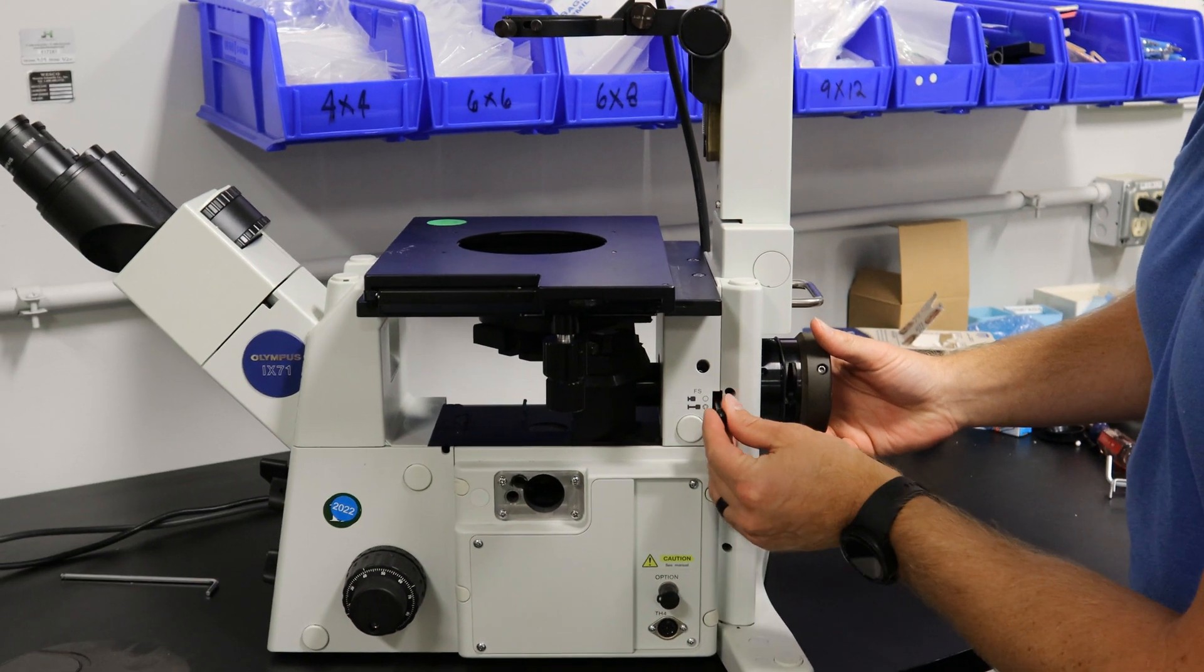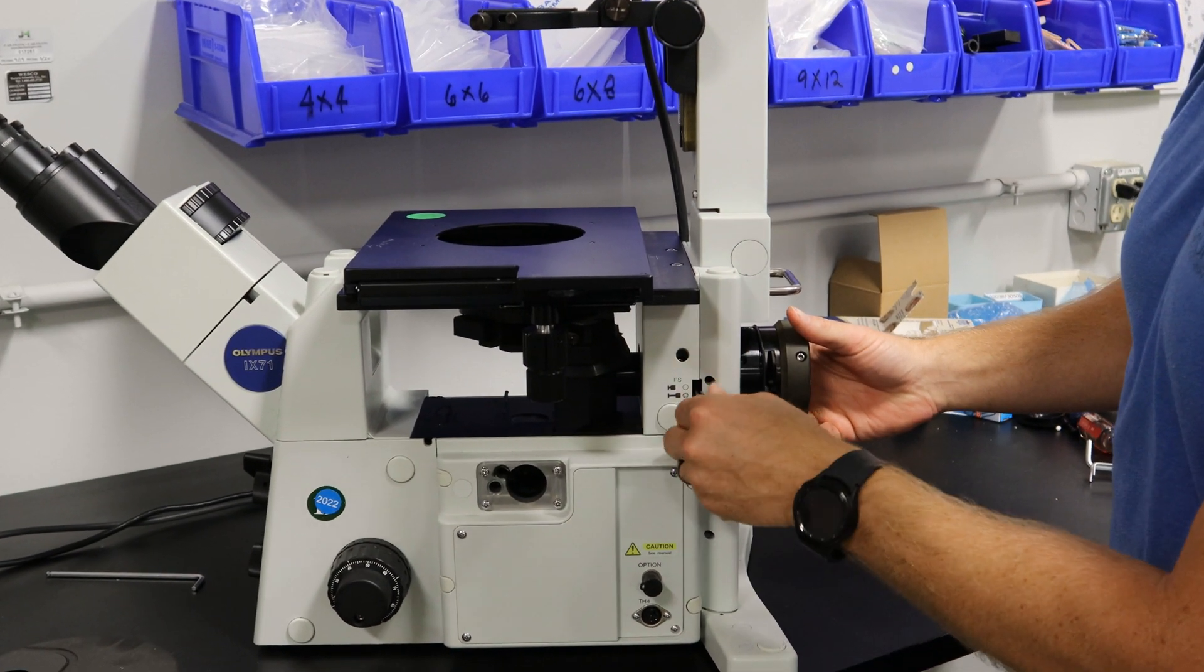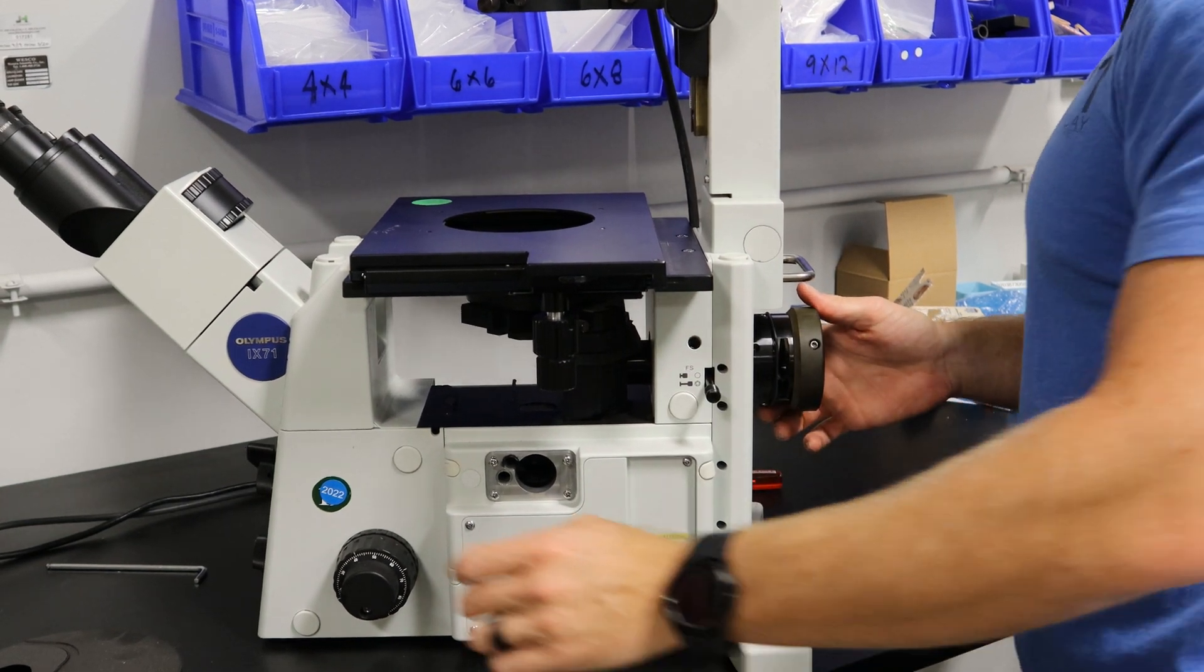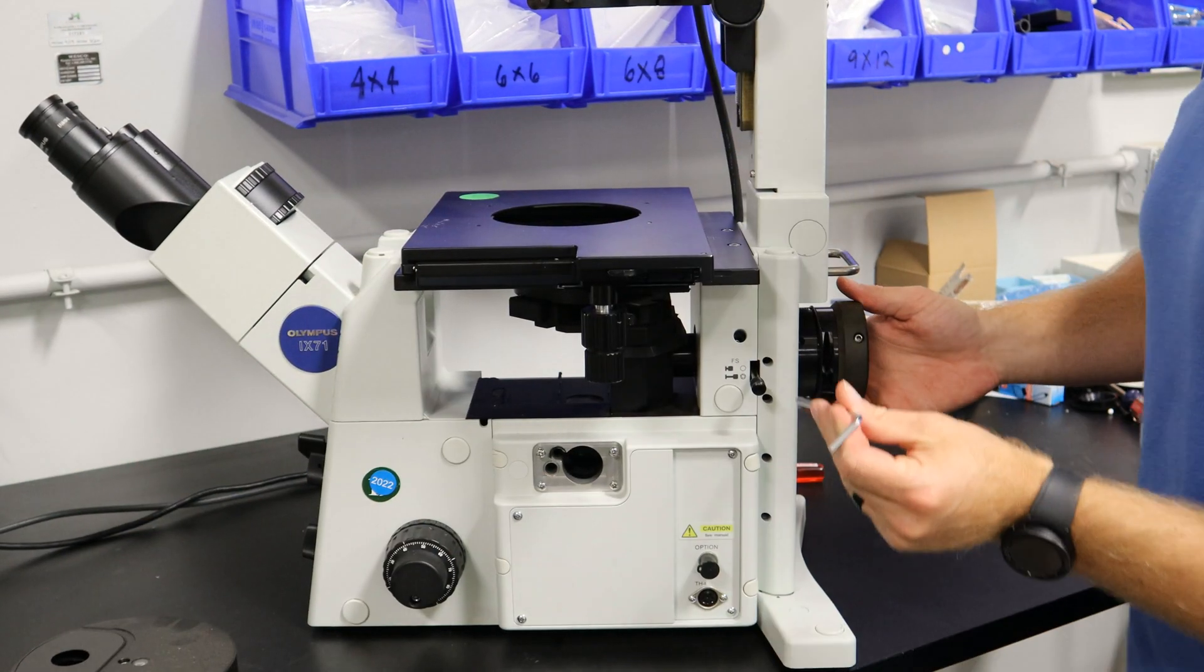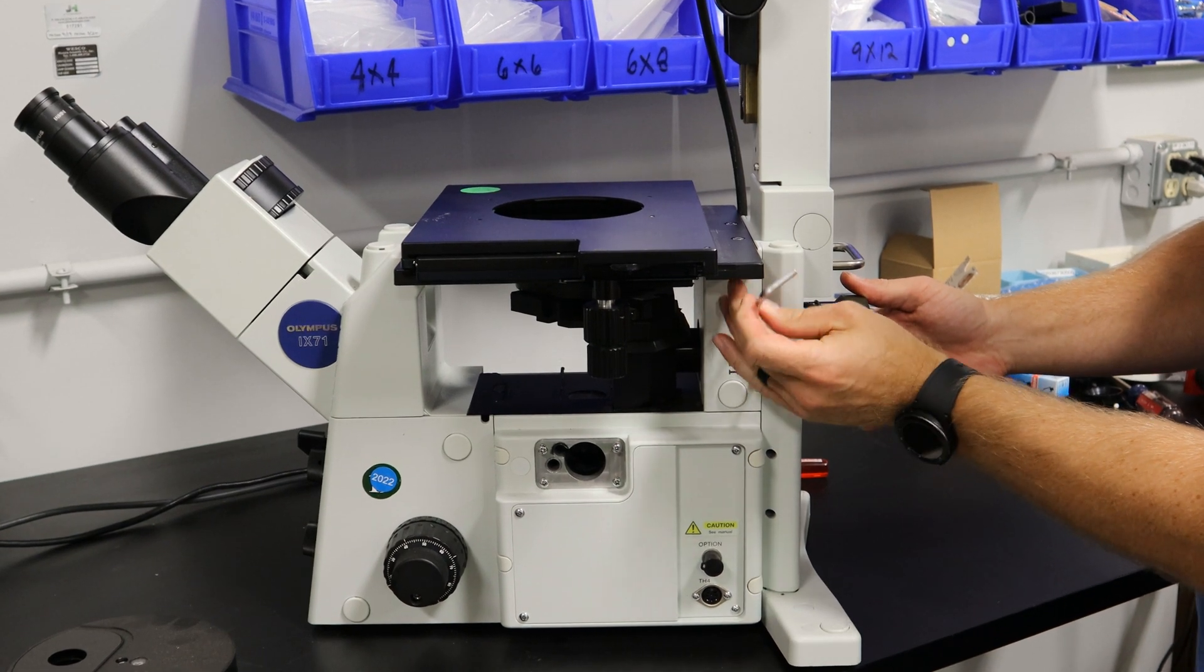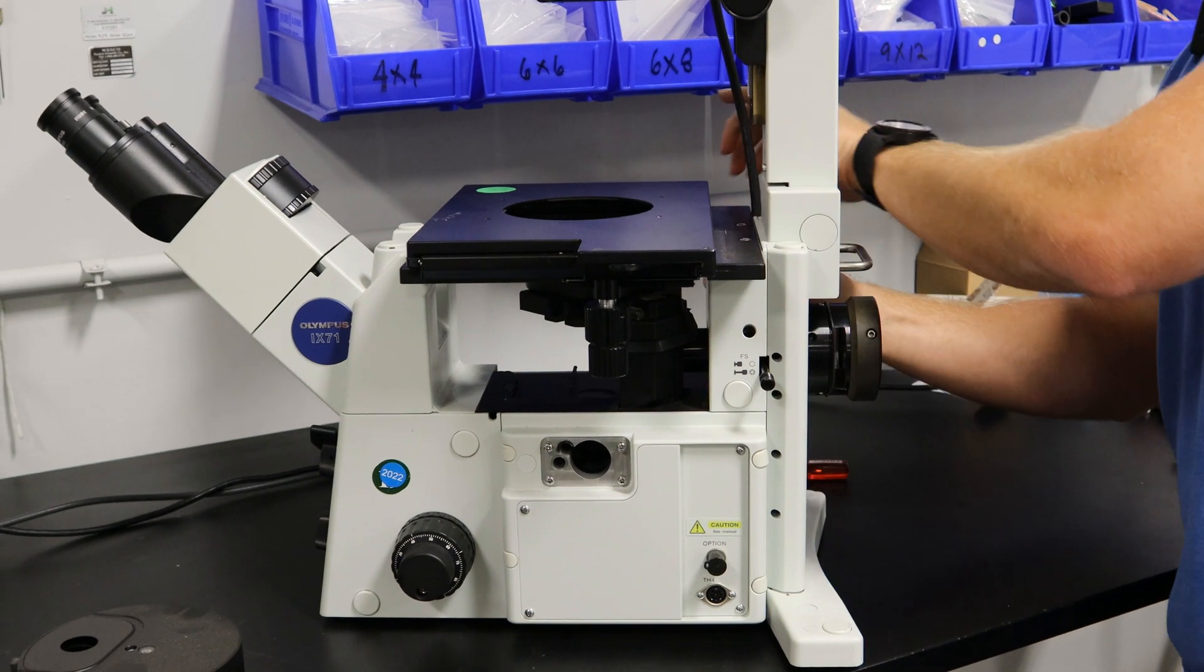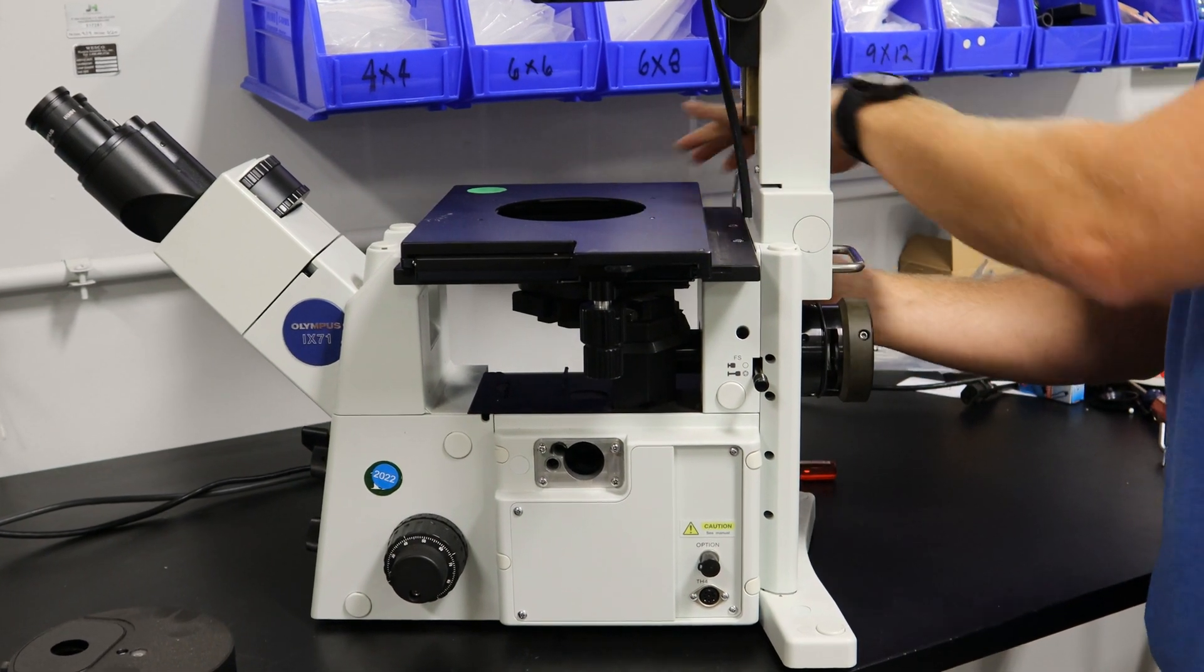Then we're going to put in the field stop here. It screws right in. There'll be four millimeter Allen holes in each side. You'll tighten those down. There's one on the opposite side. You just saw it when we were doing the disassembly.